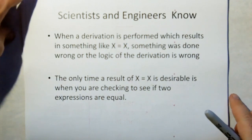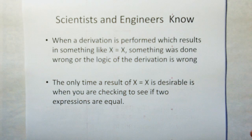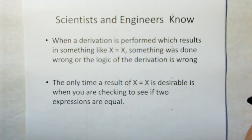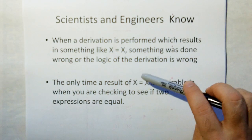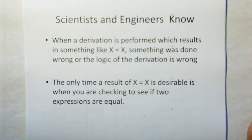Scientists and engineers know when a derivation results in something like x equals x, something was done wrong. You ended up substituting the same equation twice, or the logic was just plain wrong. The only time x equals x is desirable is when checking if two expressions are equal.